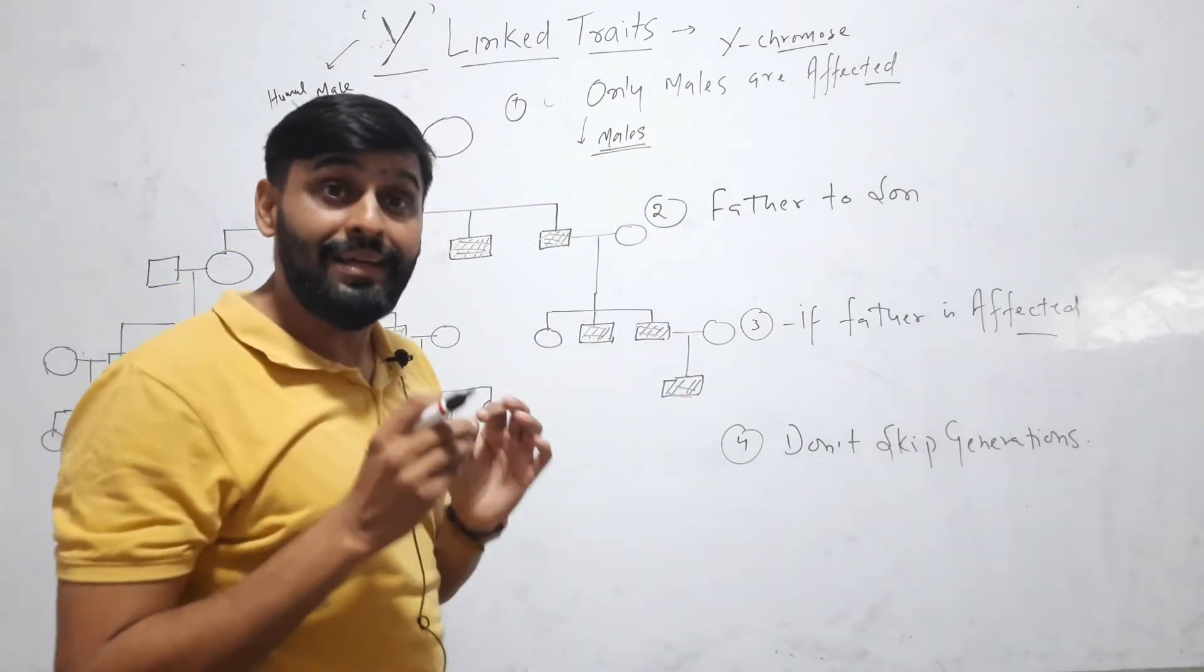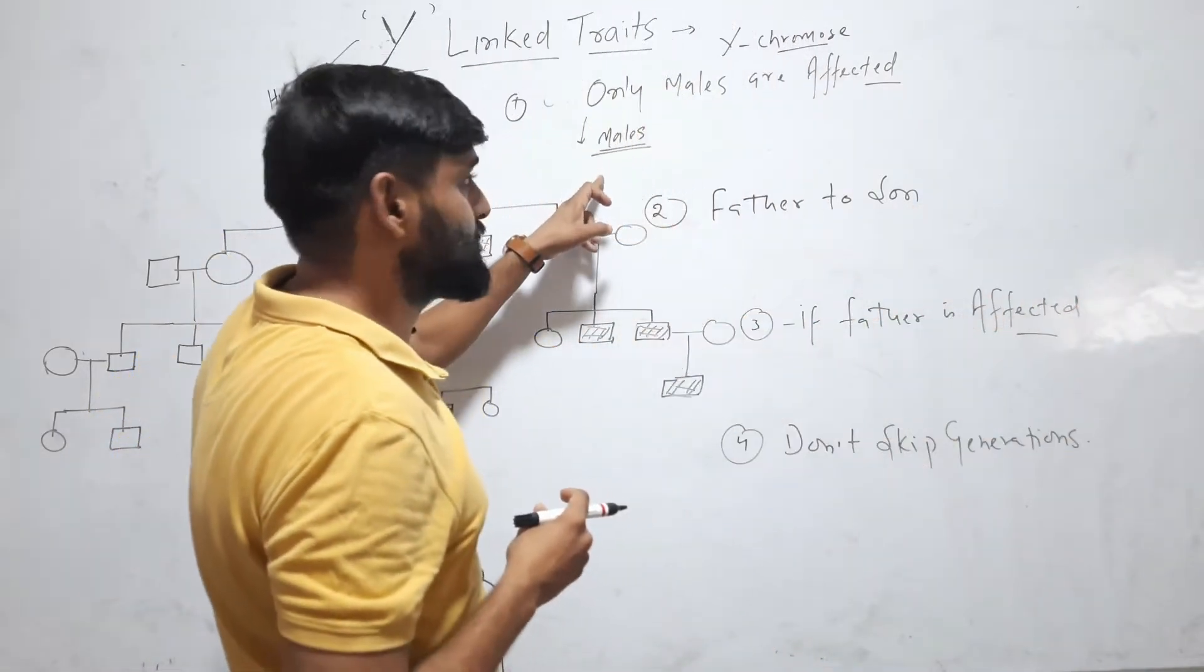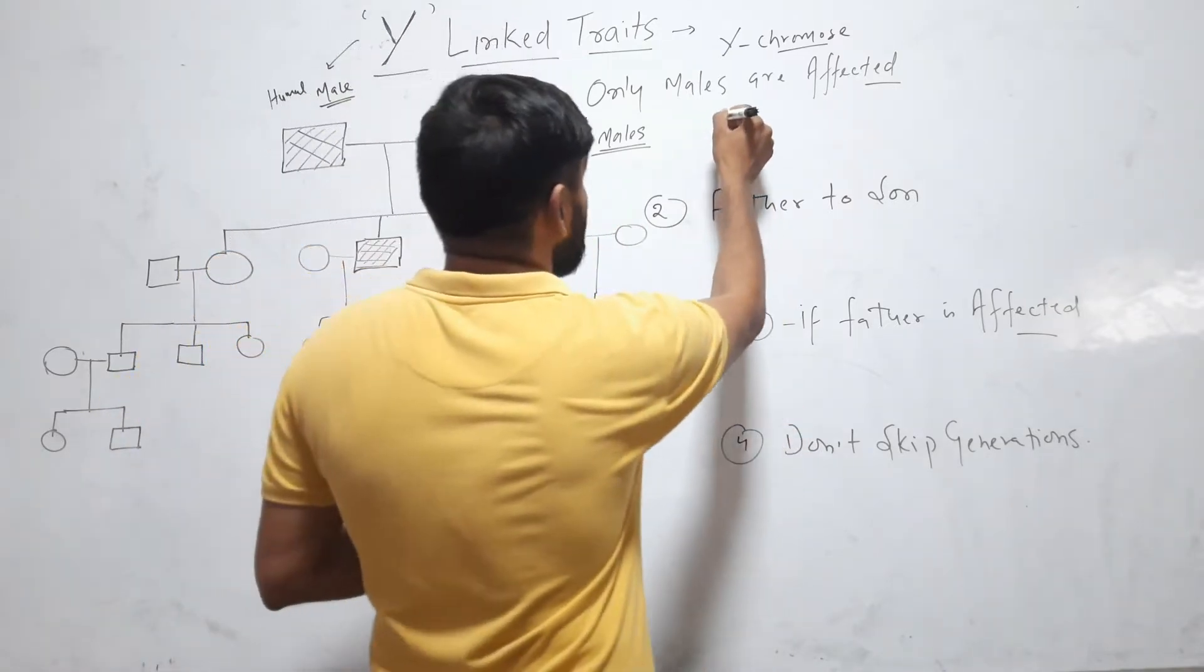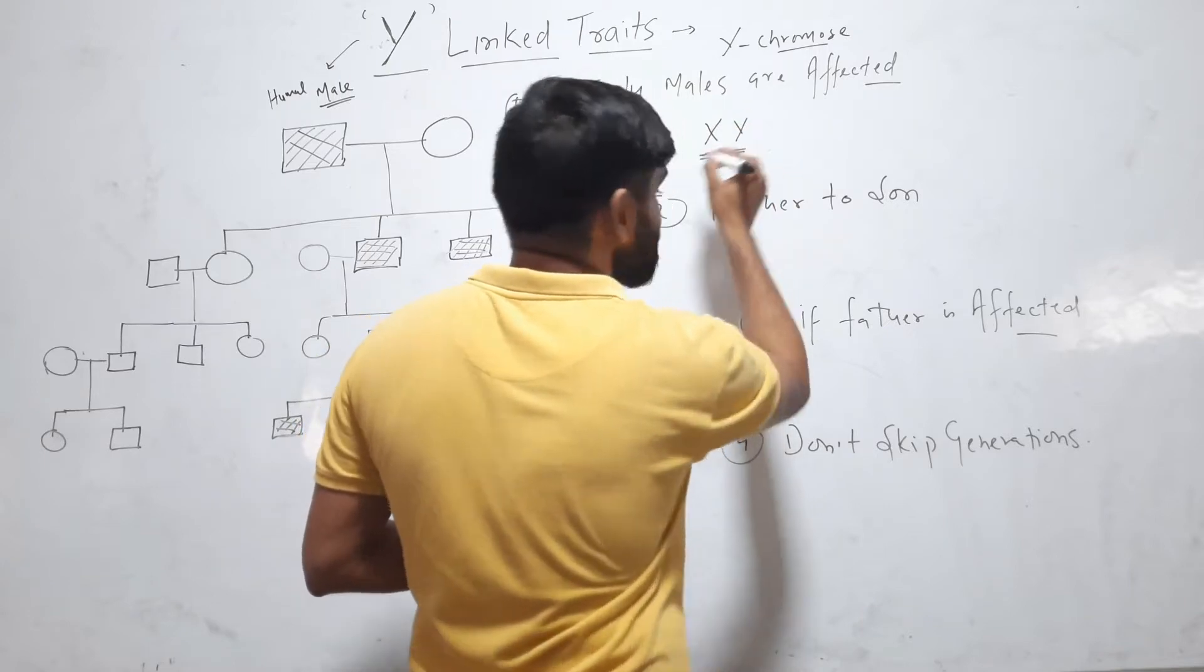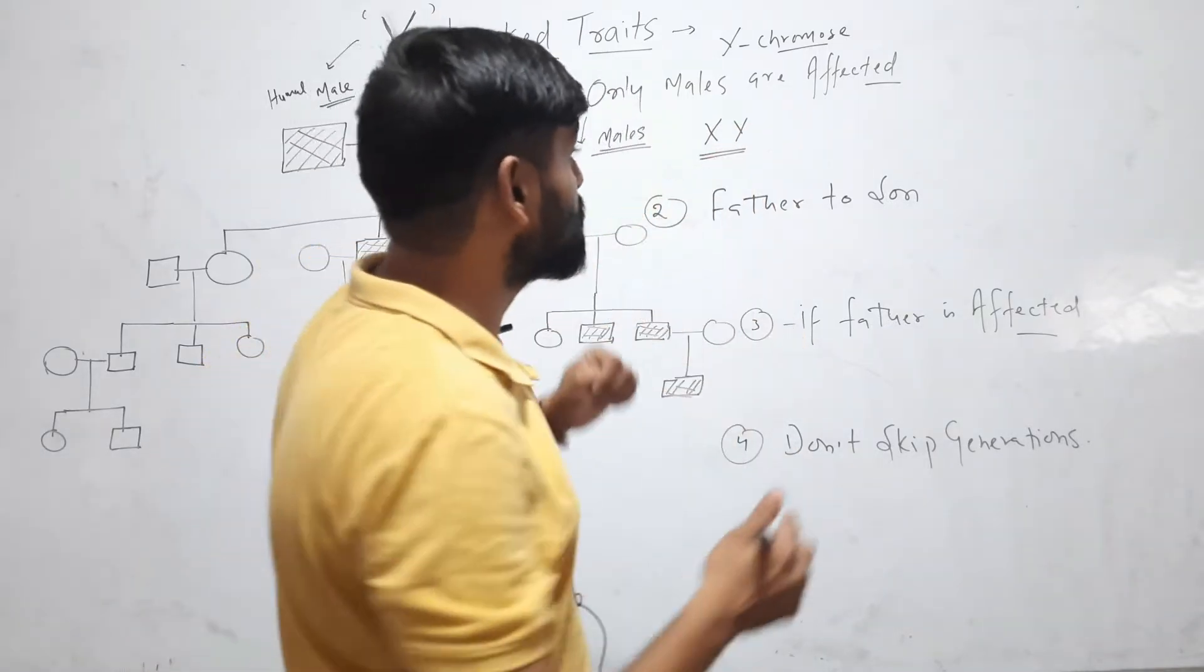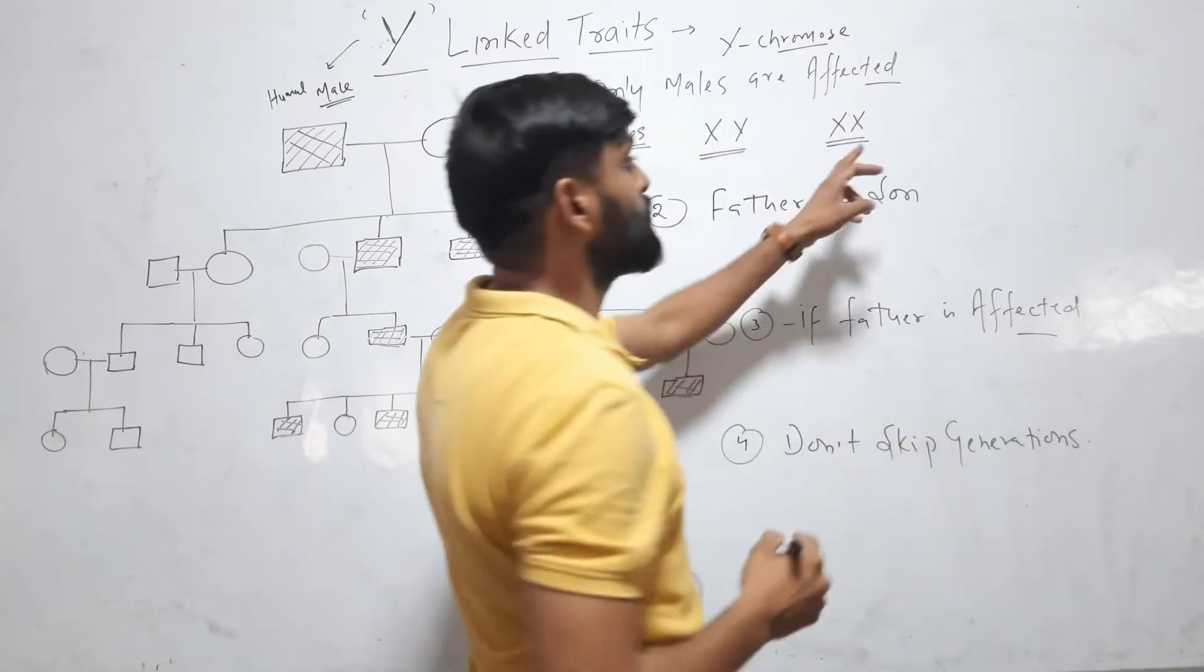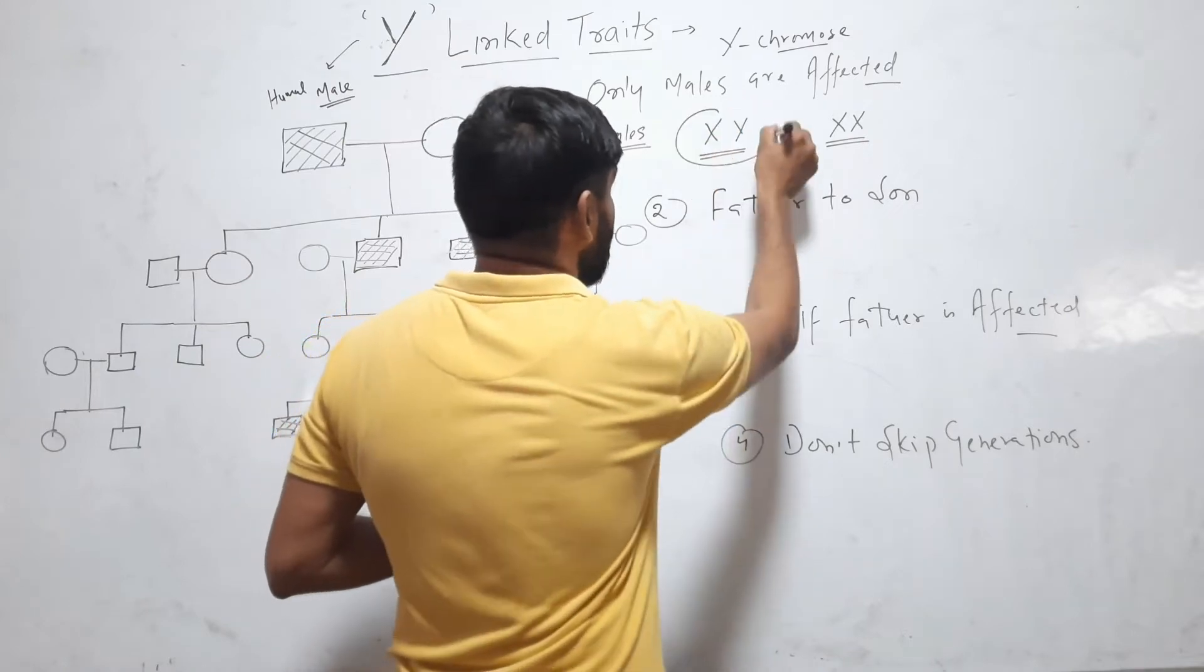If in a pedigree you find that all males are affected, that means it is Y-linked trait. Because human male is XY, in case of female there is XX. So there is no Y-chromosome in case of female. It is only found in males.